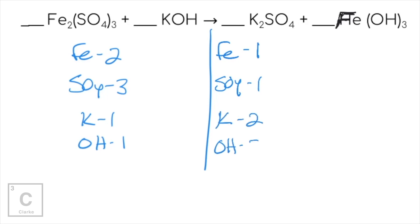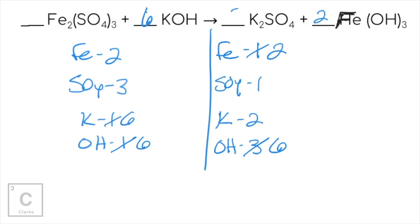Potassium: two; hydroxide: three. Let's start at the top — we've got two irons on the reactant side, so put a two. Now we have two irons but six hydroxides. Let's put a six with hydroxide. That messed up potassium — six potassiums — so let's hop to the other side and put a three, giving us six. That messed up sulfates, so put a three — and on the other side, we've already got a three. Two irons, three sulfates, six potassium, six hydroxide. We're good.